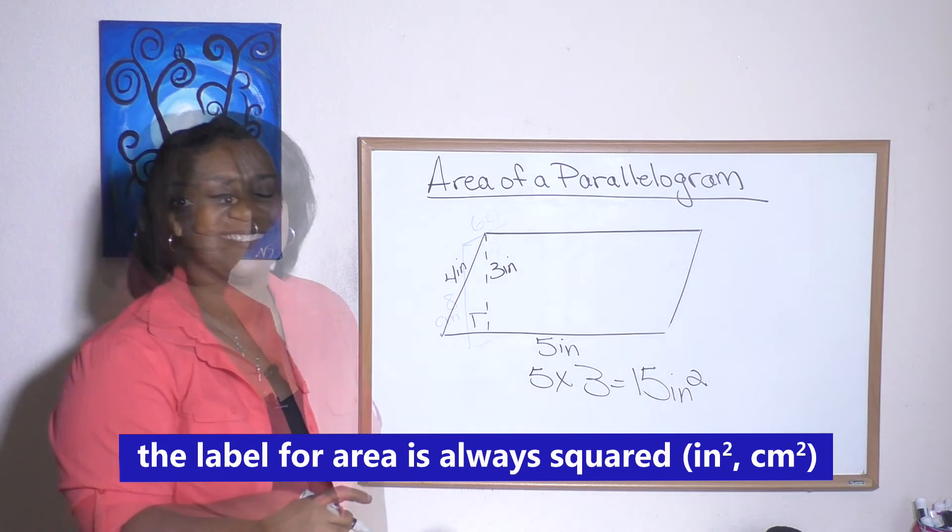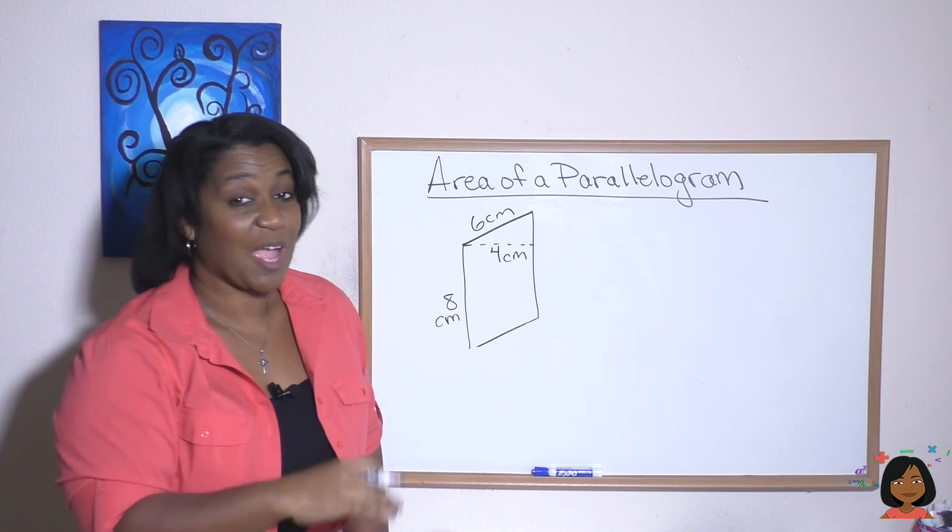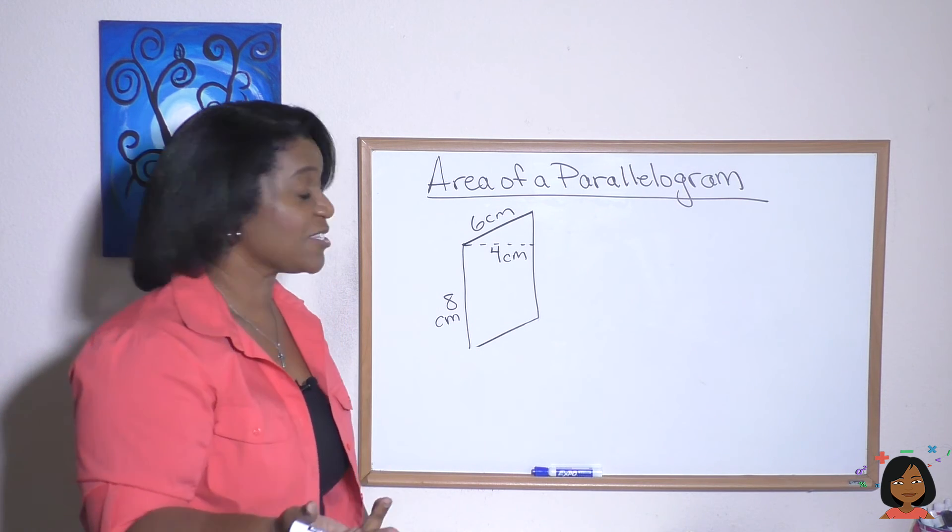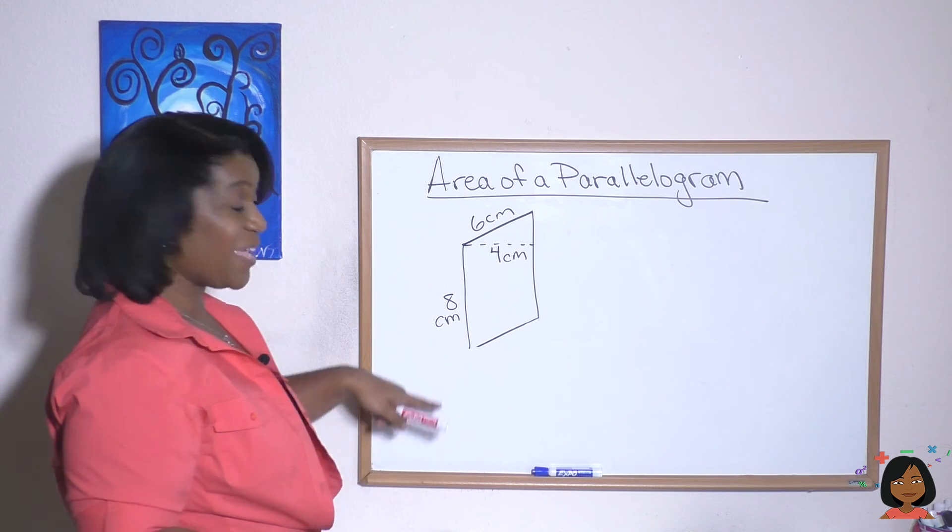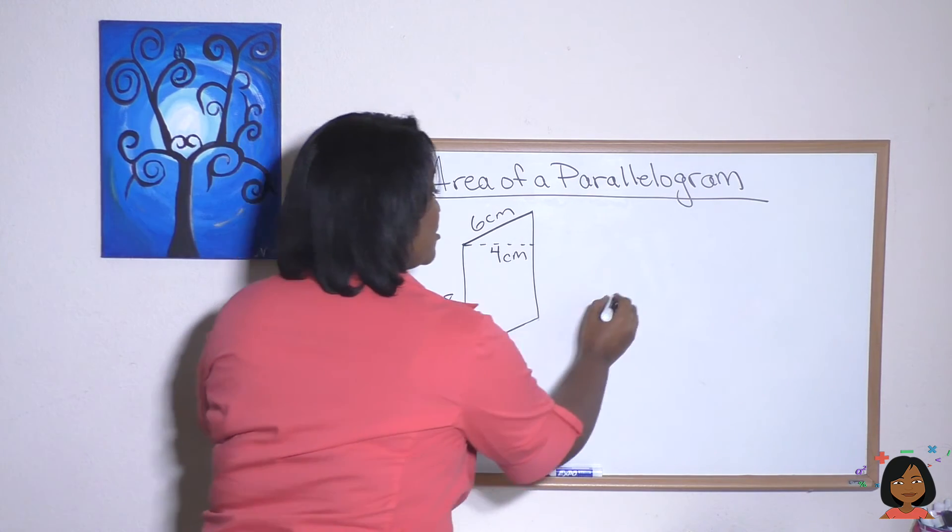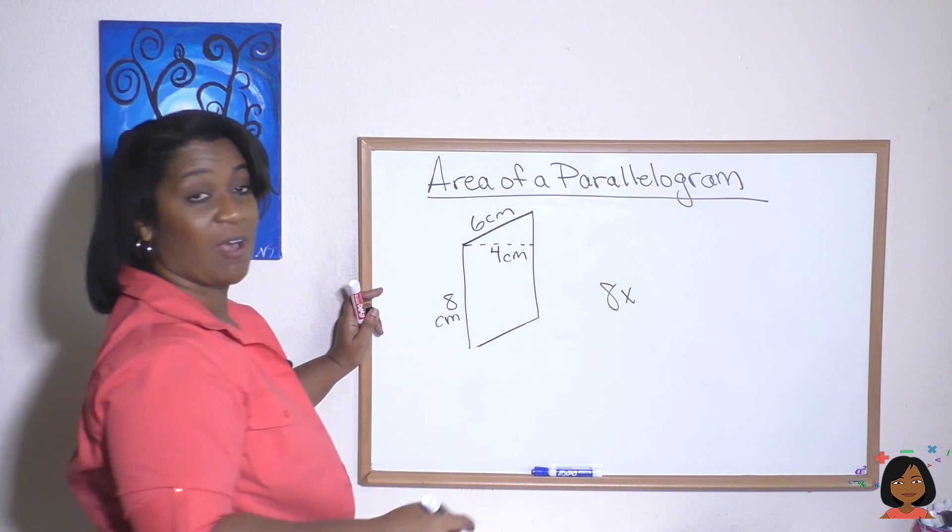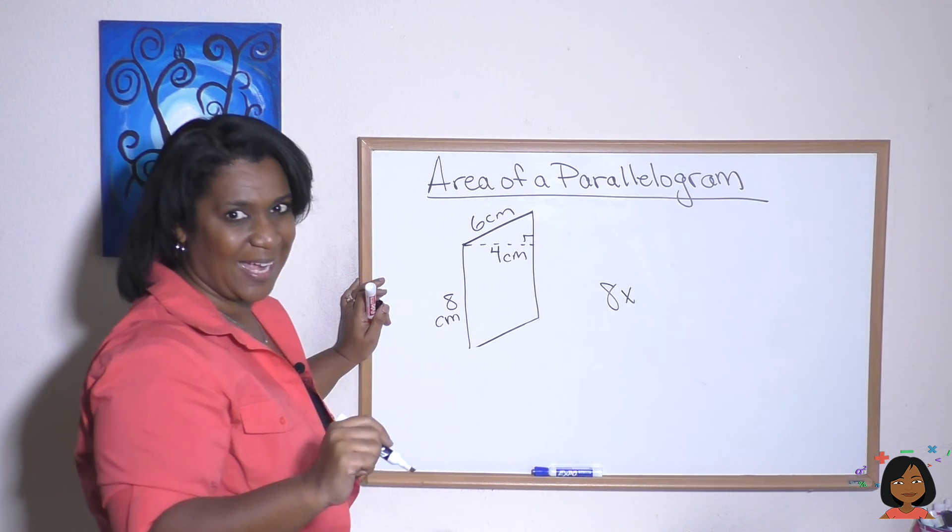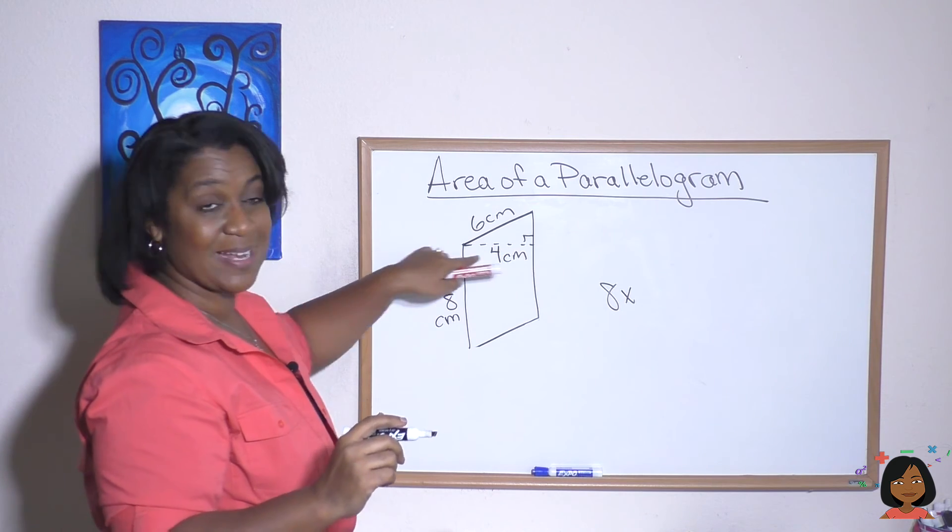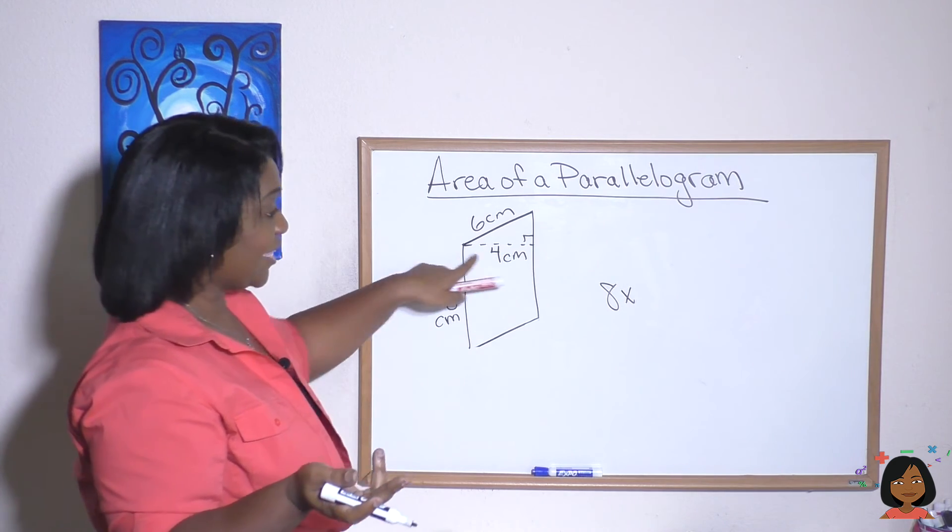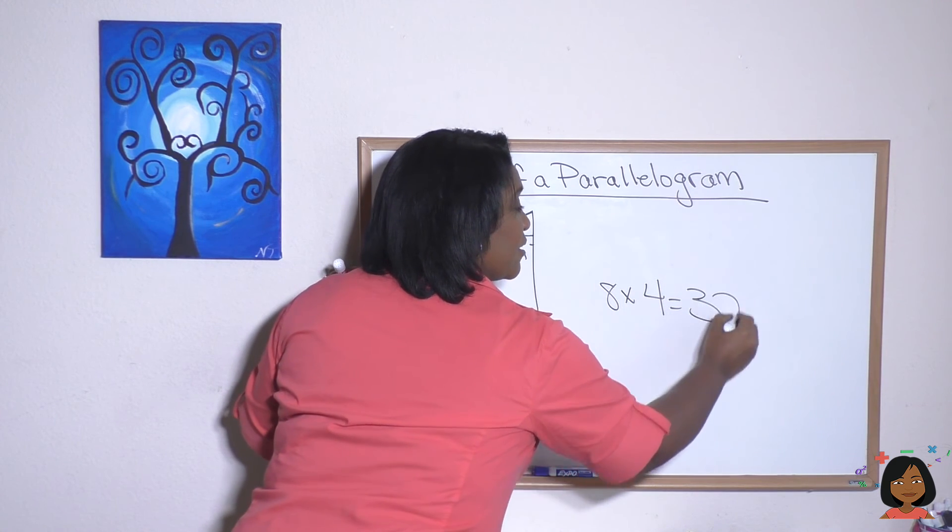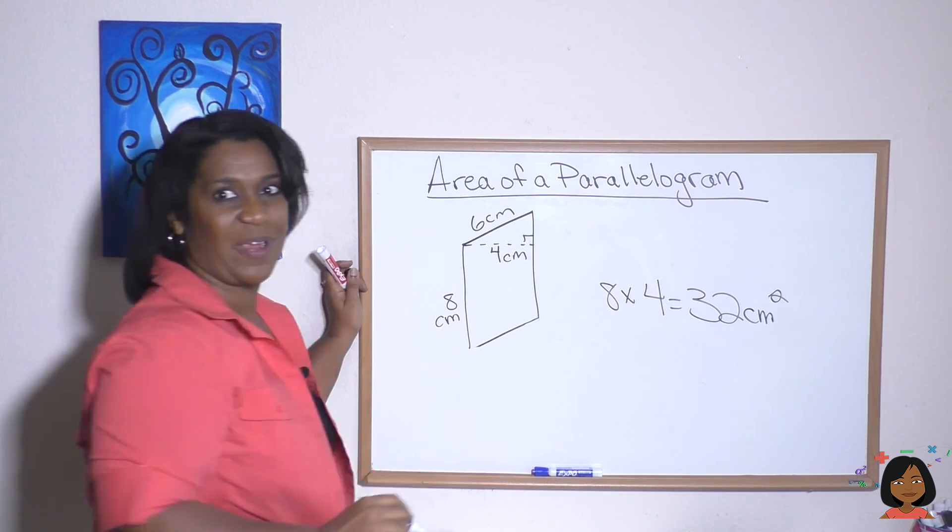Try it with this problem. Our parallelogram is just turned a little bit but we still use base times height. So here what is our base? Our base this time is eight centimeters, and our height - remember I keep forgetting to draw my little triangles but the height is where that 90 degree and that dotted line falls - that's going to be four. So eight times four equals 32 centimeters squared.